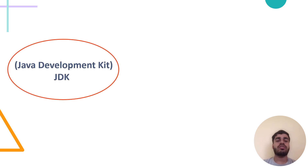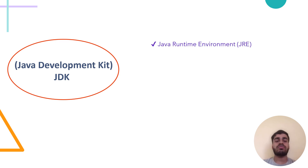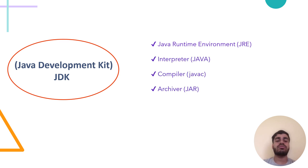Now let's look into what Java Development Kit means. JDK is a cross-platform software development environment that offers a collection of tools and libraries necessary for developing Java-based software applications or applets. JDK consists of Java Runtime Environment, interpreter, compiler, archiver and document generator, and a few more tools that go into developing a Java program.